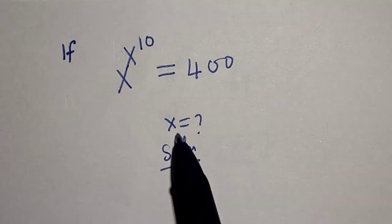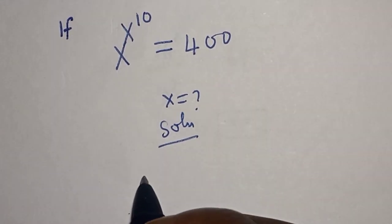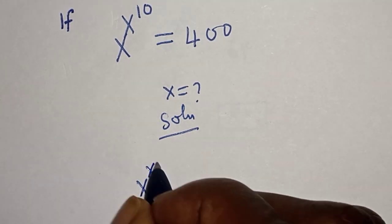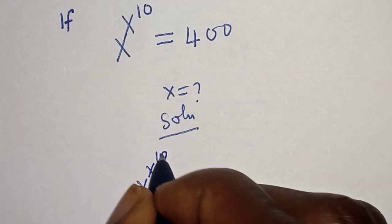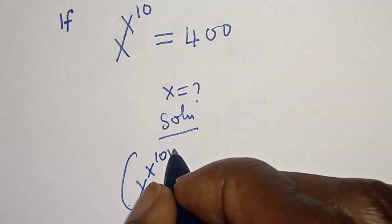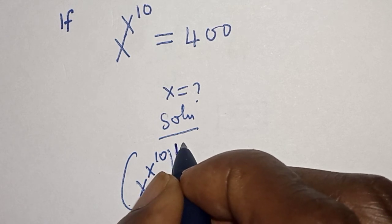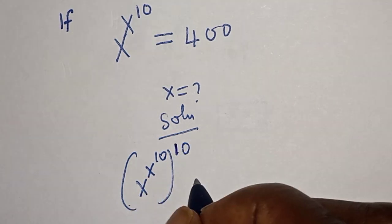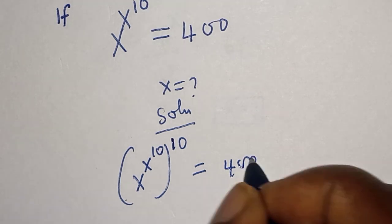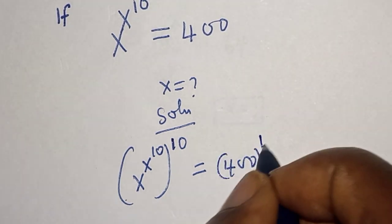Let's take the power of both sides by 10. That is s raised to power s raised to power 10, raised to power 10, is equal to 400 to the power of 10.